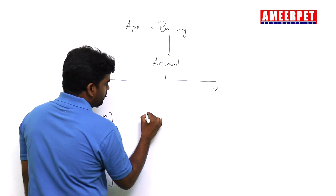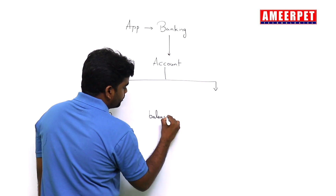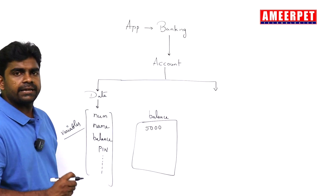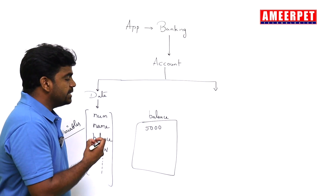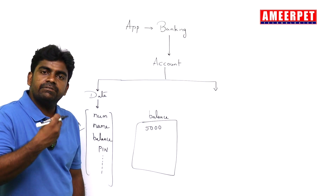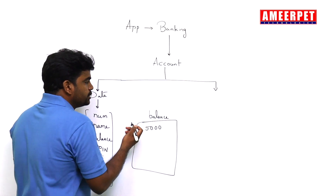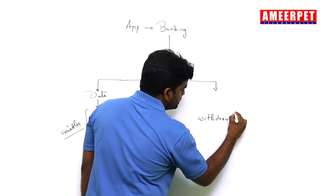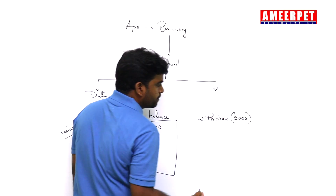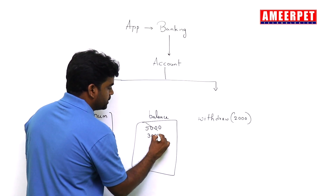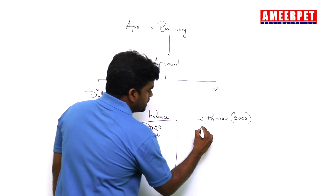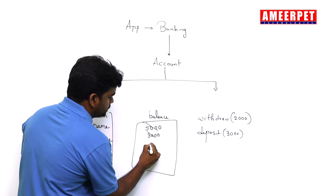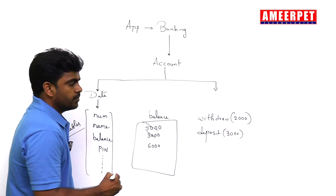For example, in your account there is a balance of 5000 rupees. When will the balance change? The balance will change when you perform some operations on the account. If I withdraw 2000 rupees, it changes to 3000. If I deposit 3000 rupees, it changes to 6000.